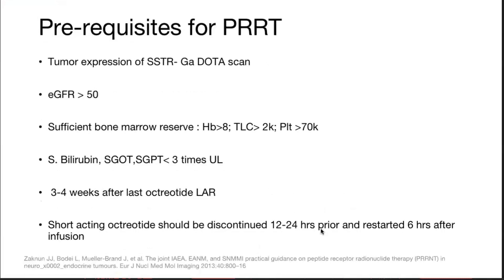Prerequisites for PRRT: the tumor must express SSTR — confirmed by DOTA scan beforehand. Patient should have good renal function — GFR more than 50. Sufficient bone marrow reserve: hemoglobin more than 8 g/dL, TLC more than 2,000, and platelet count at least more than 70,000. Bilirubin and liver functions should be less than three times the upper limit. PRRT should be given only three to four weeks after the last octreotide therapy.